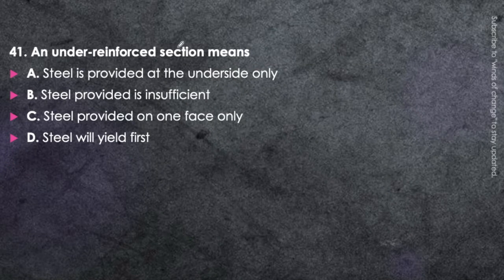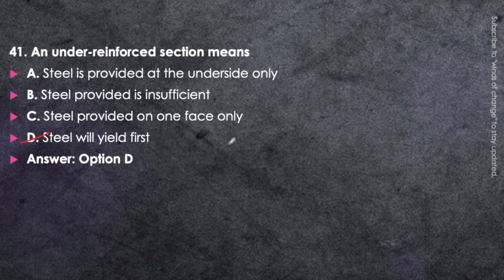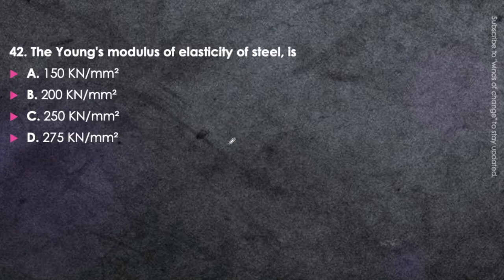Next question: An under-reinforced section means steel will yield first — option D is correct. When a section is called under-reinforced, the steel yields first and the concrete yields next. This is an easy question.